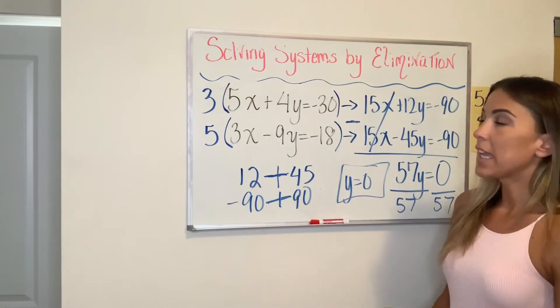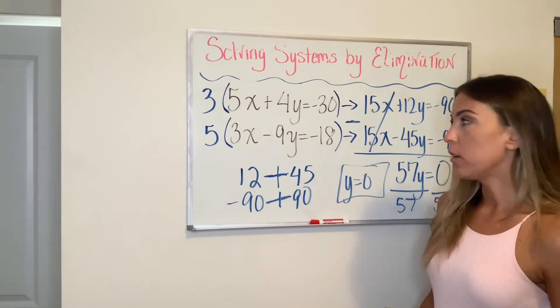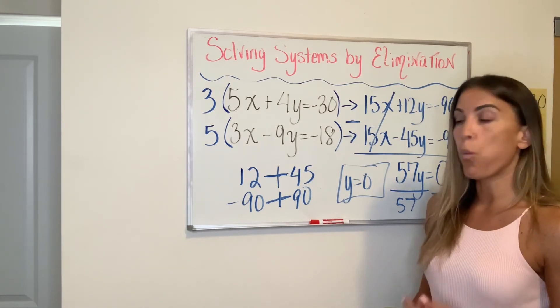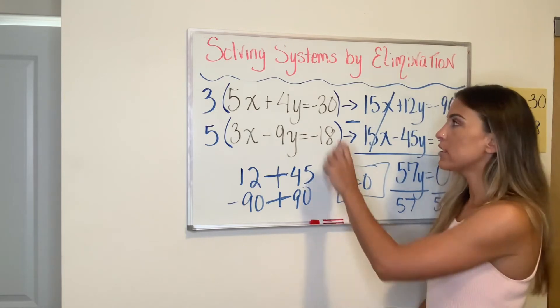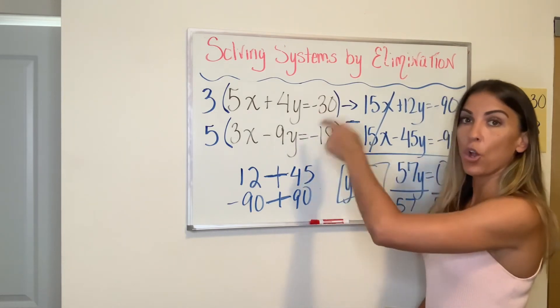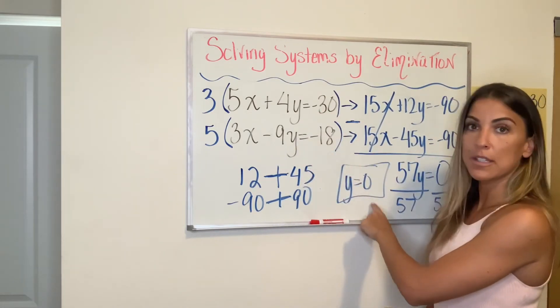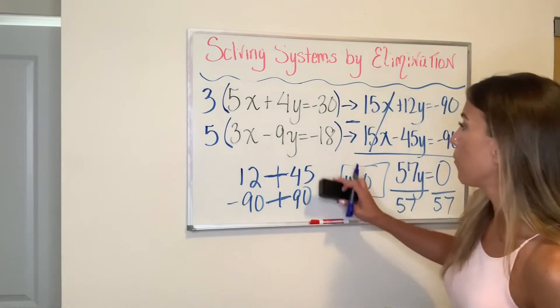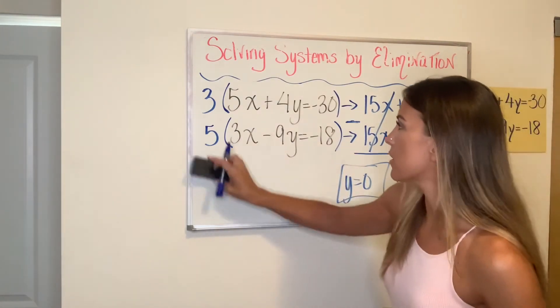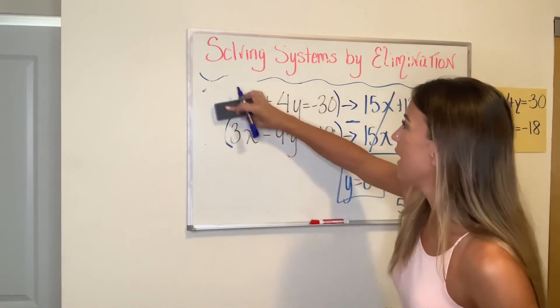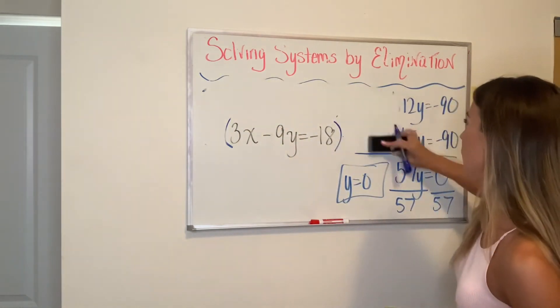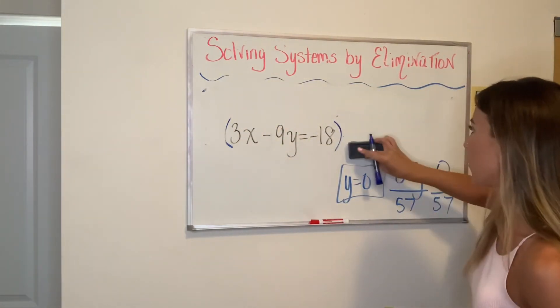And now just like every other method, every other problem we've done substitution or elimination, once you have one of the variables, your next step is always to just pick an equation and go back into it, substitute this in and get your other variable. So I will pick the bottom one just so that I have to erase less. And we're going to go ahead and substitute that zero in to the original equation.